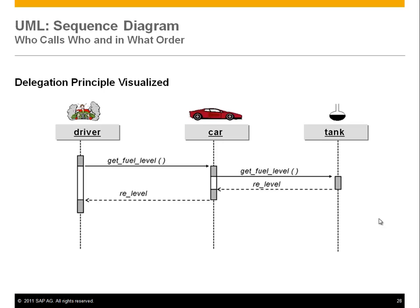Another useful diagram we'll use in the course is the sequence diagram, which shows who calls who and in what order. Assuming three classes — driver, car, and tank — the driver calls a method get fuel level. The car doesn't know it itself, so it has to ask the tank with get fuel level. The tank gives the value back and the car gives the value back to the driver. The bars show how long the call lives, indicating a nested call here.